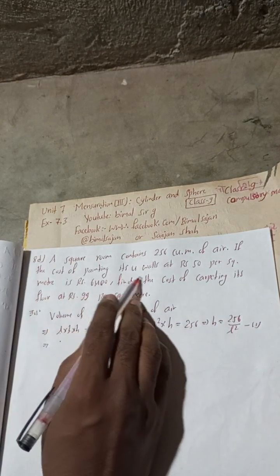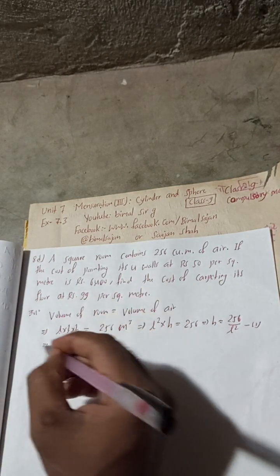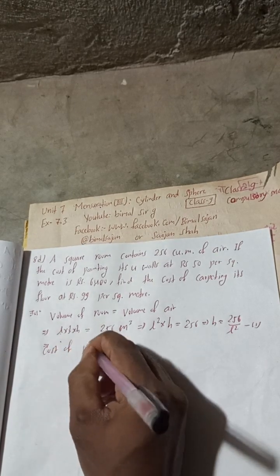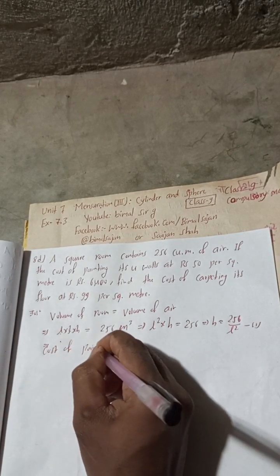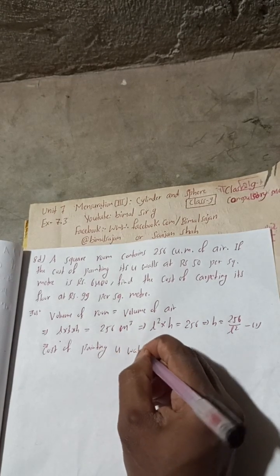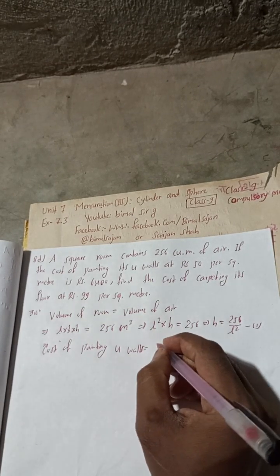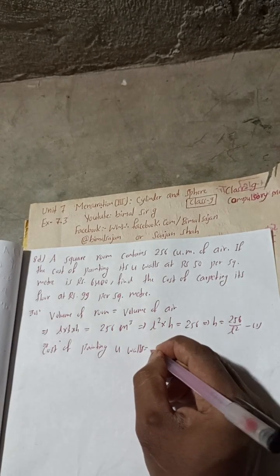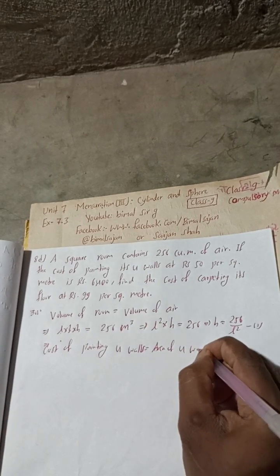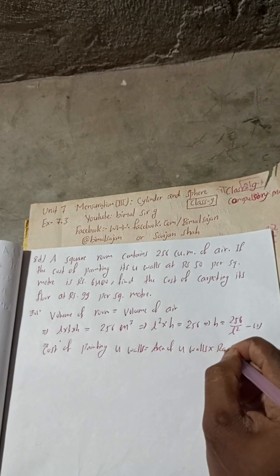If the cost of painting 4 walls is given, then: cost of painting 4 walls = area of 4 walls × rate of cost.